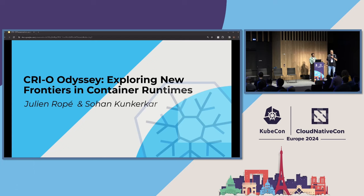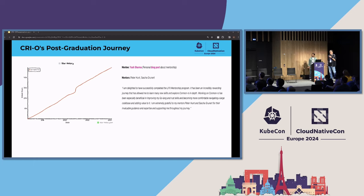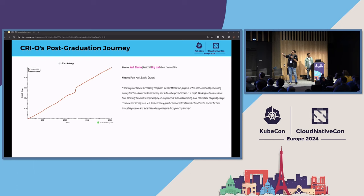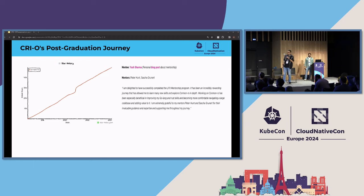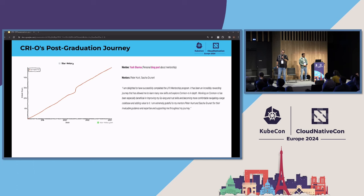Today we want to talk about what happened in CRI-O in the past months following our graduation within the CNCF. We will talk about how the project behaves at the community level. This shows the number of stars we have on the GitHub project — a steady incline over the years, showing growing interest. The work to get more contributors includes working with mentorship programs like LFX mentorship. We see a steady number of commits and contributors, and the project is in good shape and is seeing traction.